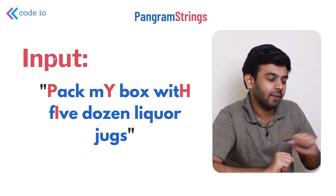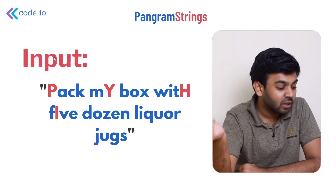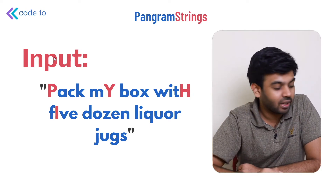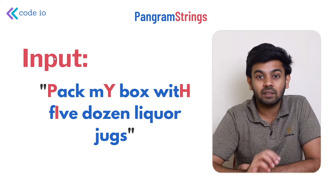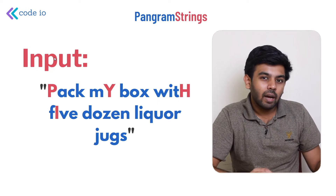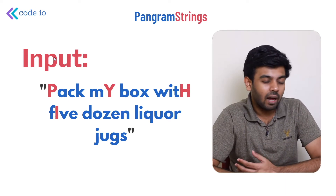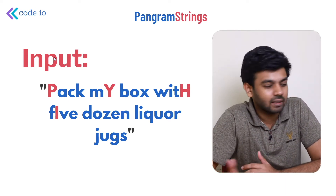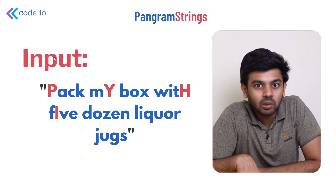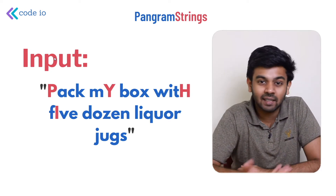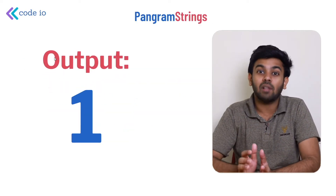Here we have an example: 'Pack my box with five dozen liquor jugs' is the string given. This string satisfies the condition — it has all the alphabets present in the English language. Some letters appear in uppercase, but we are still considering those as valid characters. For this particular input, the output should be one, as it is a pangram and has all the alphabets.